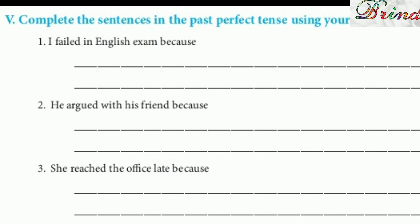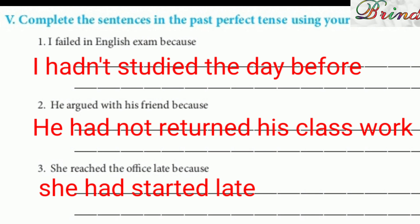Moving on to Roman numeral five: complete the sentences in past perfect tense using your own ideas. 'I failed in English exam because I hadn't studied the day before' or 'I was not attentive in the class.' 'He argued with his friend because he hadn't returned his classwork, or he had not returned his pencil or rubber' — anything you can write.